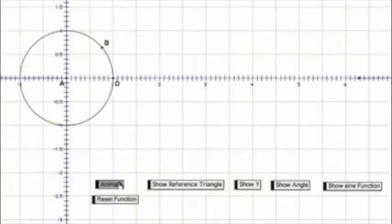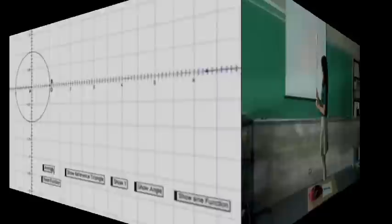Here we see it actually graphed on the geometry sketch pad. You're passing 90 degrees, or pi over 2, heading towards 180 degrees, or pi. 270 degrees, or 3 pi over 2, and last but not least 360 degrees, or 2 pi.